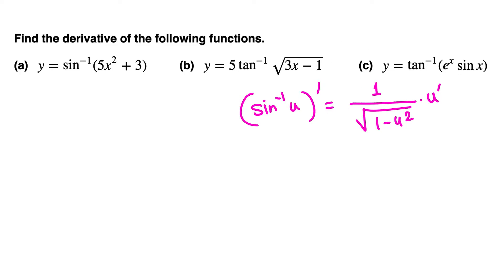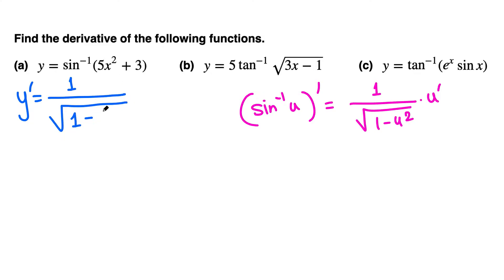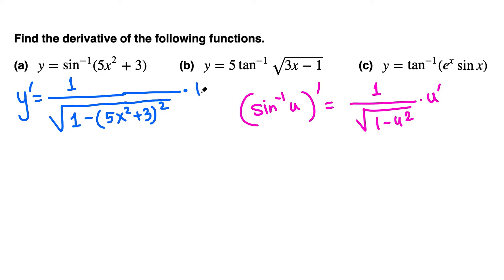Using this formula we can finish in one line. The derivative is 1 over the square root of 1 minus (5x squared plus 3) quantity squared — that's from the formula — times u prime, which is the derivative of the inside function: derivative of 5x squared plus 3 is 10x. So we write 10x on top and we are done.